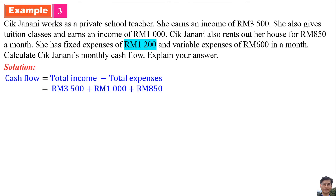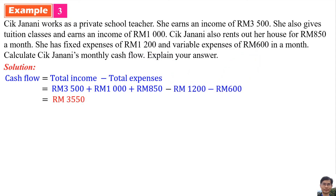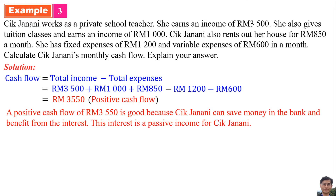The total expenses are 1,200 ringgit plus 600 ringgit equals 1,800 ringgit. Therefore, the cash flow is 3,550 ringgit, which is a positive cash flow. A positive cash flow of 3,550 ringgit is good because Jay Janani can save money in the bank and benefit from the interest earned, which becomes an additional positive income for her.